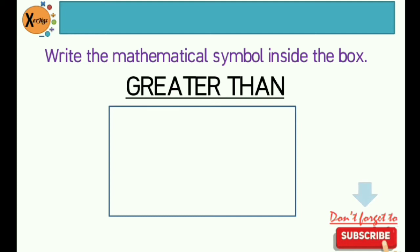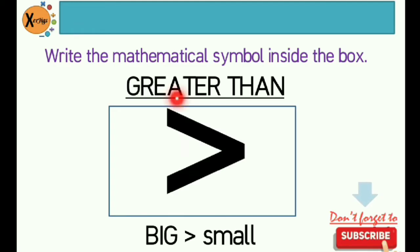First on the list is greater than. So what is the mathematical symbol of greater than? So it looks like this. The big end is on the left side, while the small end, which is pointing the small number, is on the right side. So that's big is greater than small. Big number is greater than small number. Example, 8 is greater than 5.